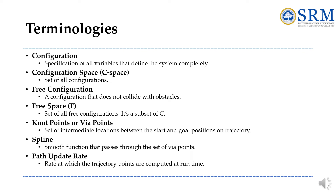There are several terminologies used in trajectory planning. Configuration is the specification of all variables that define the system completely. Configuration space is the set of all configurations. Free configuration is one that does not collide with obstacles. Free space, denoted by F, is the set of all free configurations and is a subset of the configuration space. Node points are the set of intermediate locations between the start and goal positions on the trajectory. A spline is a smooth function that passes through a set of node points. Path update rate is the rate at which trajectory points are computed at run time.